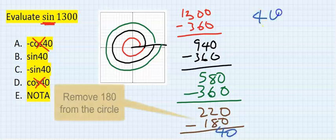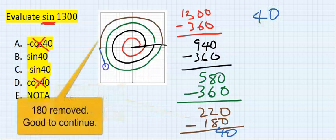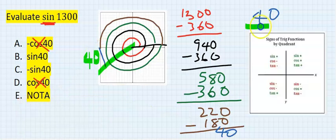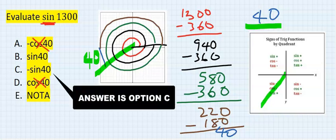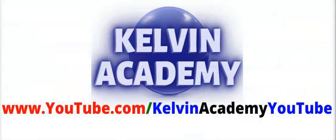I have 40 remaining. So I come in here at 40 degrees. The angle of 40 fell in this quadrant, where sine is negative. Hence, my answer is the negative option between the two. See you in the next video.